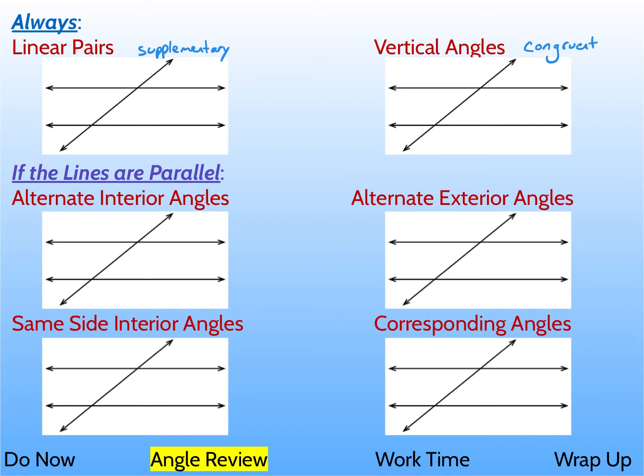For an example of linear pairs, remember they're next to each other — they form a line. There are two linear pair angles that are supplementary to each other. For vertical angles, they're formed by intersecting lines, and the angles that are non-adjacent — the angles kind of opposite each other.